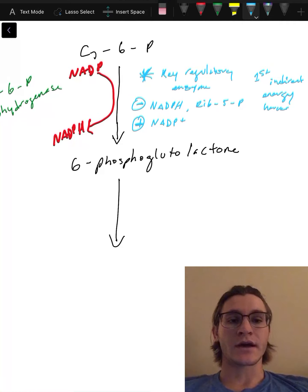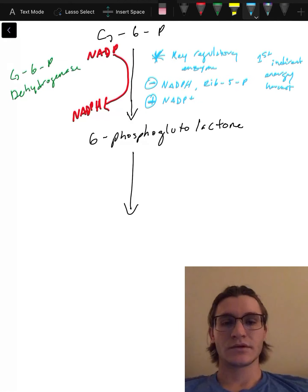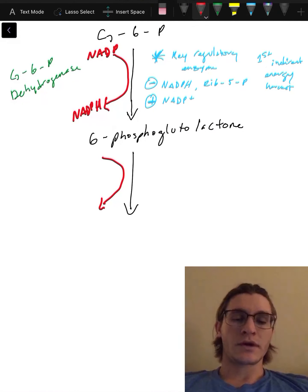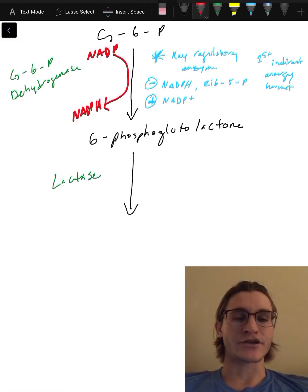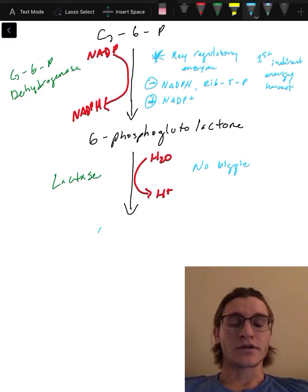Now we have 6-phosphoglutolactone, and we're gonna have a simple exchange here done by lactase. Lactase is gonna be the enzyme. Lactase doesn't have any energy products, but it's gonna take water and make a hydrogen molecule. So we're gonna take H2O and make a hydrogen molecule. The product that we're gonna make is 6-phosphoglutonate.